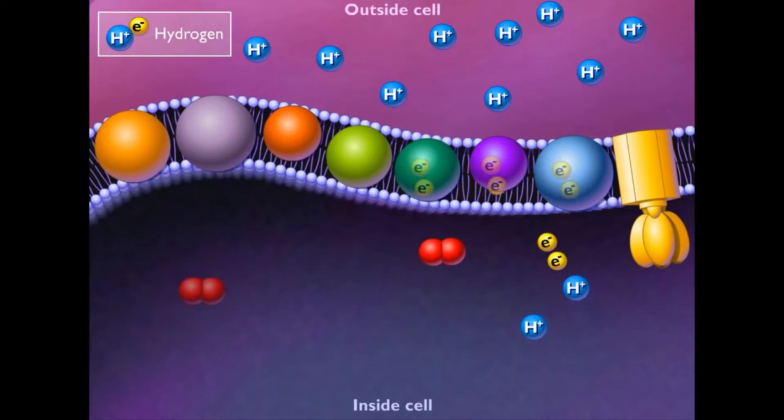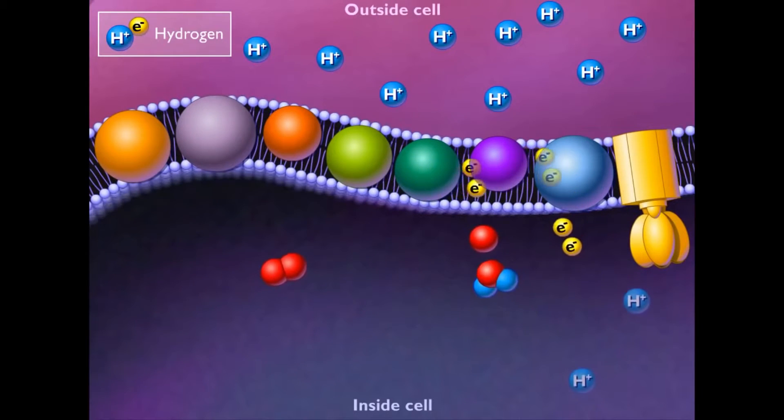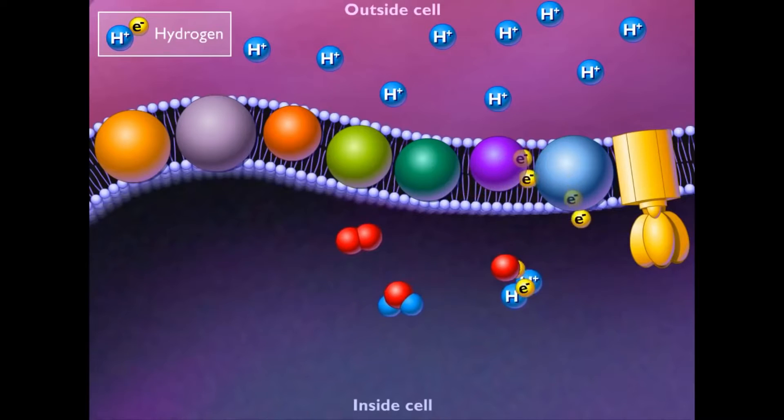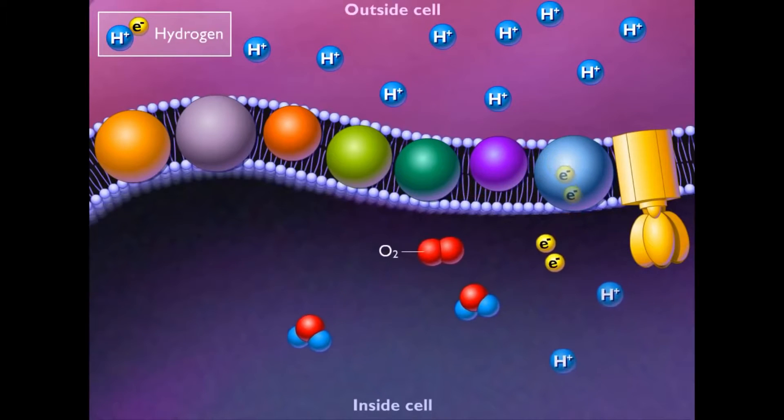During aerobic respiration, the last carrier protein transfers a pair of electrons to oxygen at the end of the electron transport chain, and water is formed.